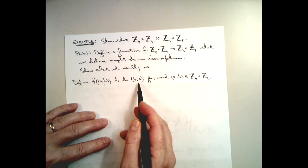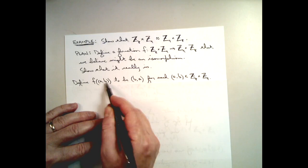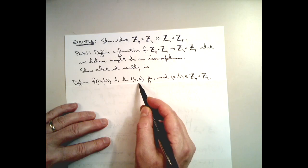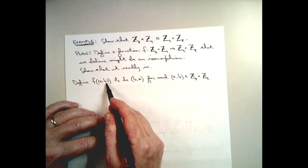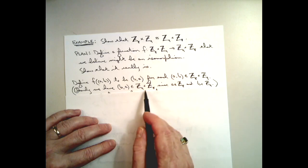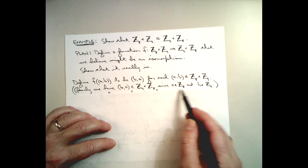Let's take an element (a, b) — A is something between zero and seven, B is something between zero and eight; it's in Z8 × Z9. I'm going to define F(a, b) = (b, a). If (a, b) is in Z8 × Z9, then (b, a) — reversing the coordinates — is going to be in Z9 × Z8. So clearly (b, a) is in our target group, our codomain, provided that A is in fact in Z8 and B is in Z9.